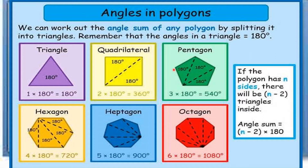For a five-sided polygon, known as a pentagon, three triangles are formed when diagonals are drawn from one vertex. So three times 180 degrees equals 540 degrees — the sum of the five interior angles. In a six-sided polygon, hexagon, four triangles are formed, giving 4 times 180 degrees equals 720 degrees.